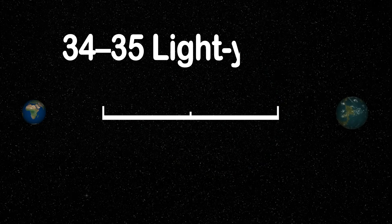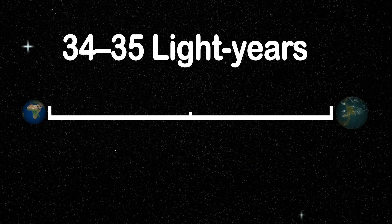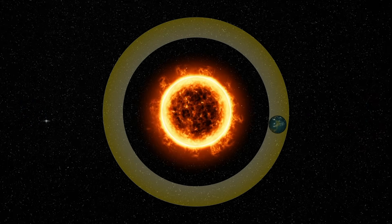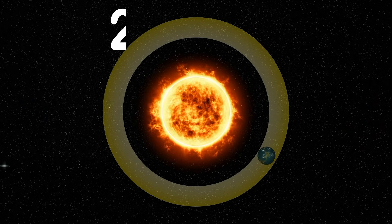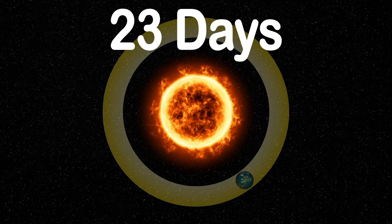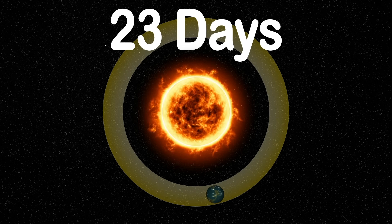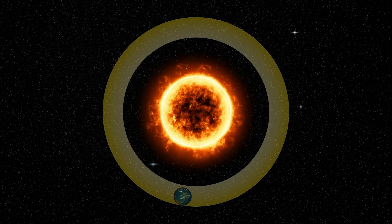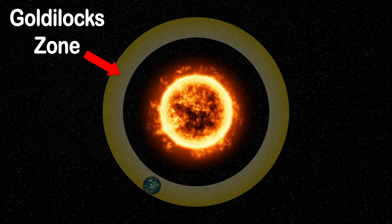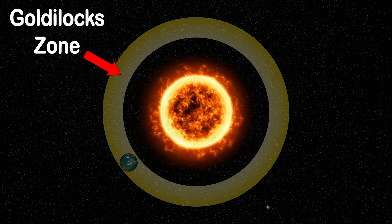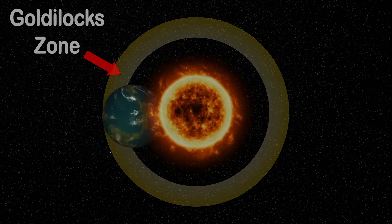I am 34 to 35 light years away from the planet you live on. I orbit my star in about 23 days at a distance that could be habitable. The zone is called the Goldilocks zone. It's where warmth and liquid water could exist, you know.